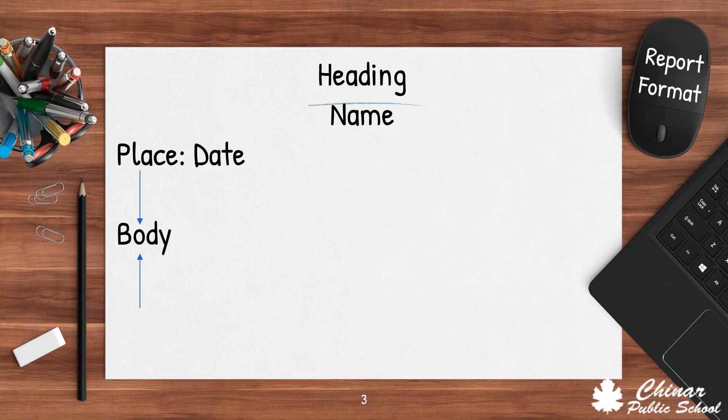Now let's look at the format of report writing. You write the heading, then the name, then the place, colon, and the date in the correct format, and then the body part. That's it — no box, nothing else to be made.